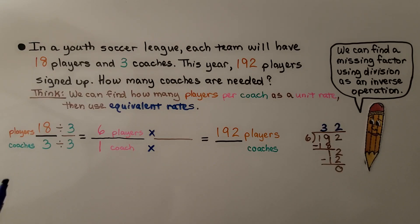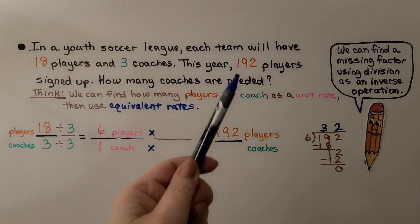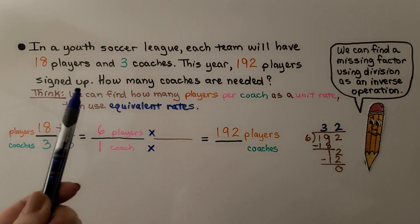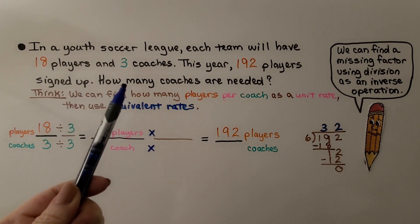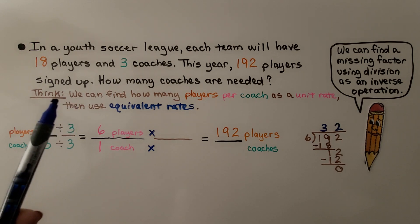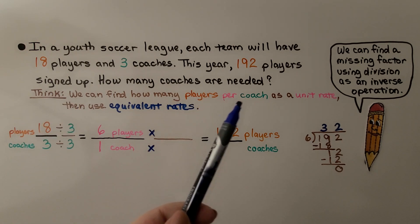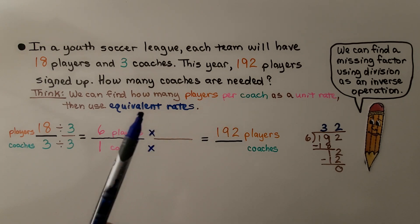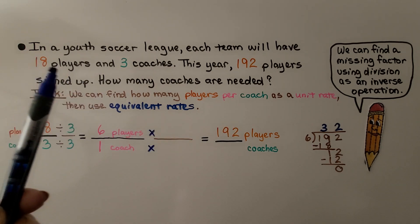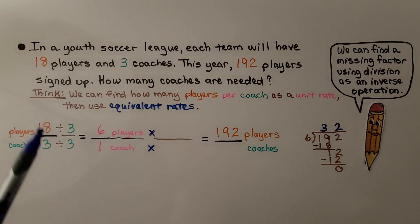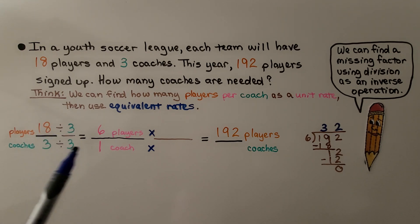In a youth soccer league, each team will have 18 players and three coaches. This year, 192 players signed up. How many coaches are needed? We can find how many players per coach as a unit rate, then use equivalent rates. 18 players, three coaches. We divide both by three so we can have a denominator of one for our unit rate. We see it's six players for one coach.